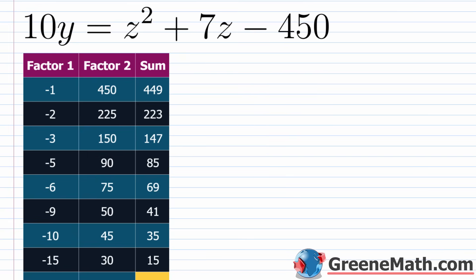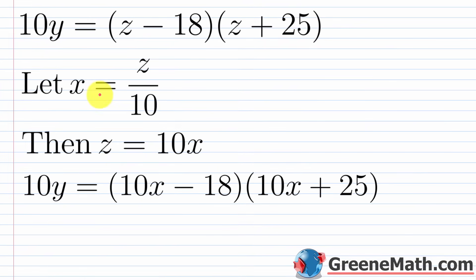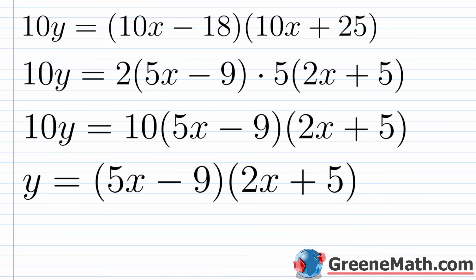Factor z² + 7z − 450 using −18 and 25: (z − 18)(z + 25). Since x = z/10, we get z = 10x. Replace z with 10x in each factor: (10x − 18)(10x + 25). Pull out GCF from each: 2(5x − 9) · 5(2x + 5). Since 2 · 5 = 10, dividing both sides by 10 gives y = (5x − 9)(2x + 5).